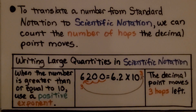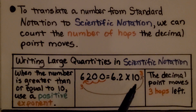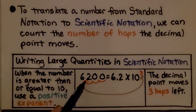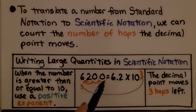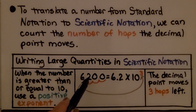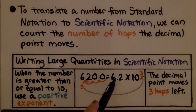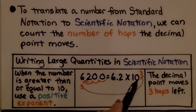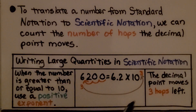For writing large quantities in scientific notation, when the number is greater than or equal to 10, we use a positive exponent. We have 6,200 — we count the hops: 1, 2, 3 — to put the decimal place so that it would be between the ones place and the tenths place. We get 6.2 times 10 raised to the third power. The three hops, that's our exponent. The decimal point moved three hops left.